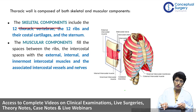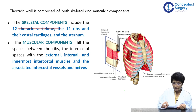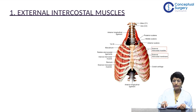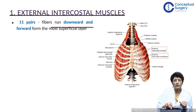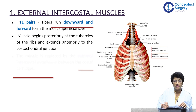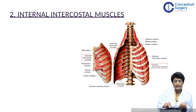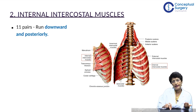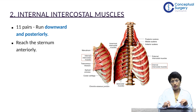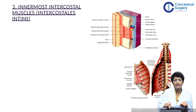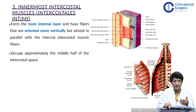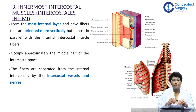The intercostal vessels supply not just the intercostal muscles but also the breast. There are 11 pairs of external intercostal muscles, running downwards and forwards, which are the most superficial layer — between the costal cartilages they are replaced by a membrane. The internal intercostal muscles, also 11 pairs, run downwards and posteriorly — opposite to the external. The innermost intercostal muscles are oriented more vertically and are separated from the internal intercostals by the intercostal vessels and nerves.